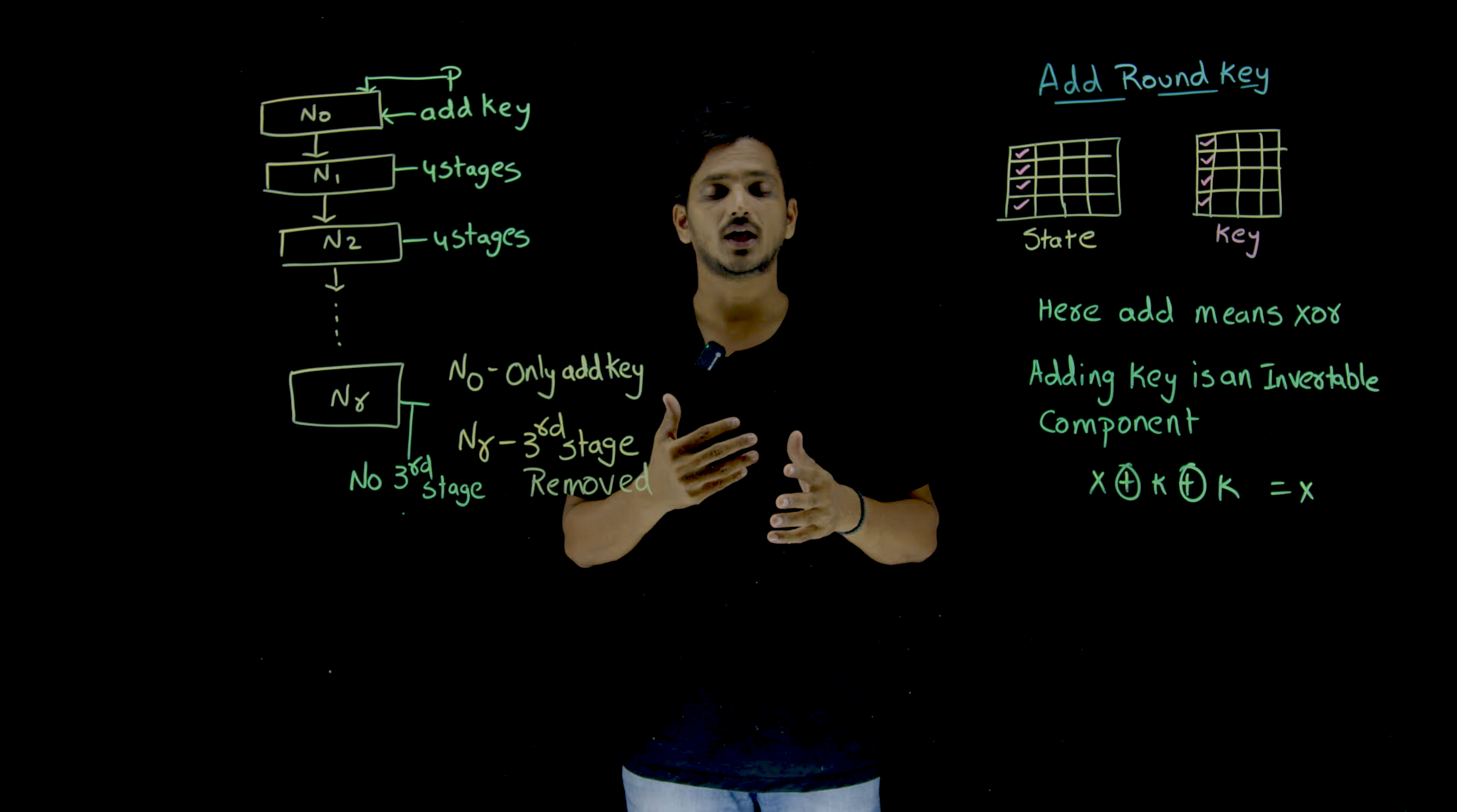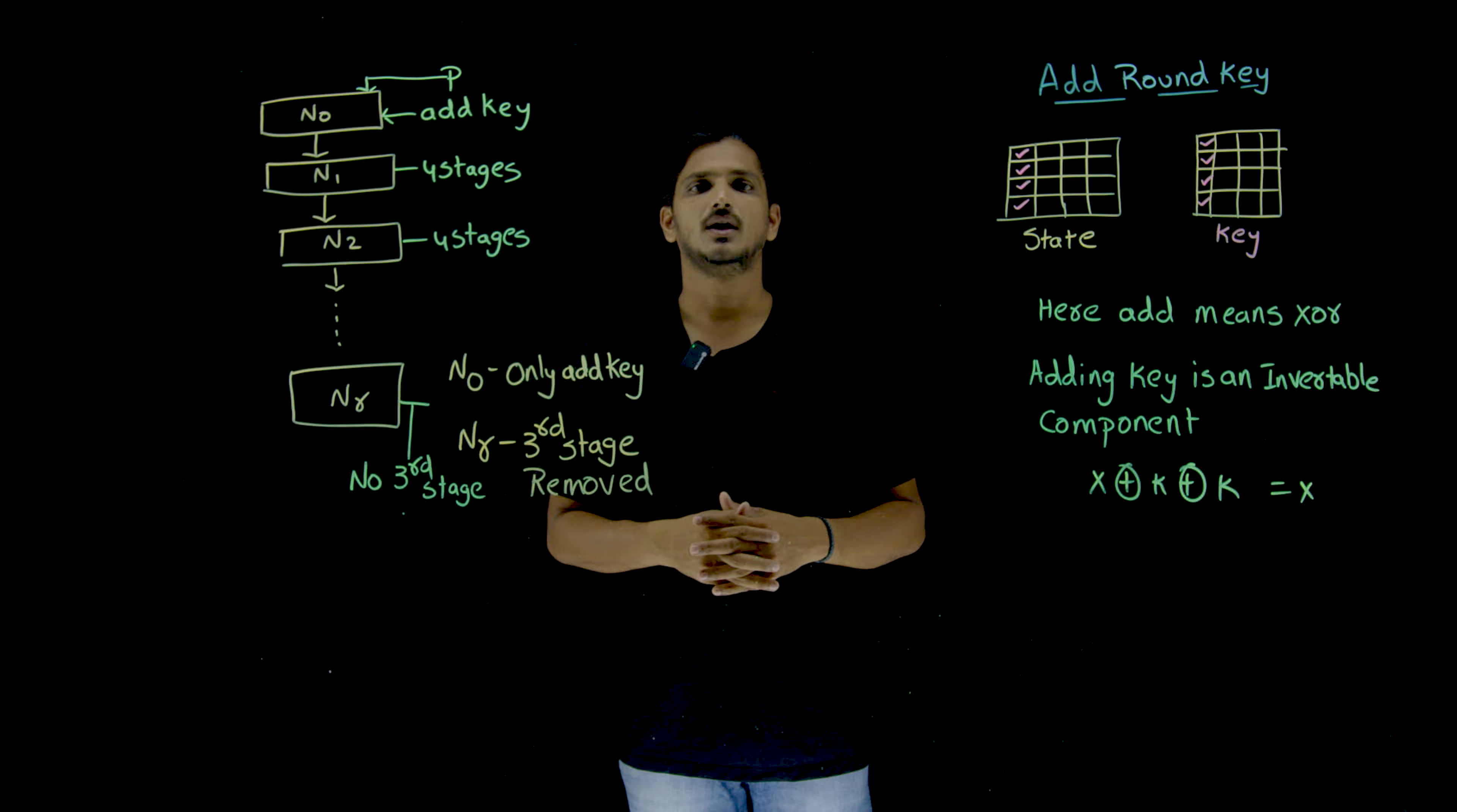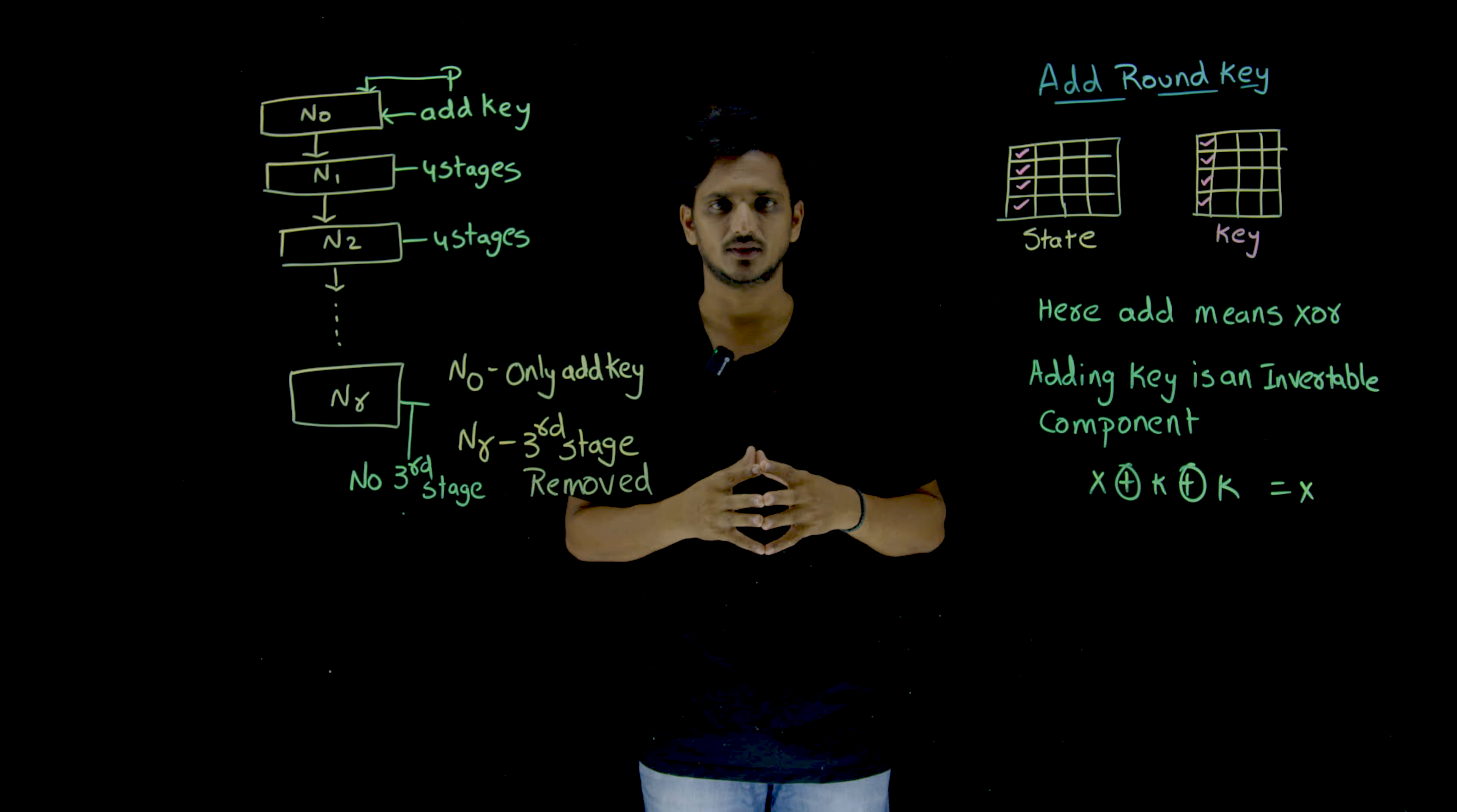Hope you understand how addition of keys are done in AES and in our next class, we are going to discuss how these 11 keys are generated, which we are going to discuss in our next class. If you have any questions regarding the concept, please post your questions in the comment section below. Thanks for watching. If you haven't subscribed to our channel, please subscribe to our channel and press bell icon for the latest updates. Thank you.